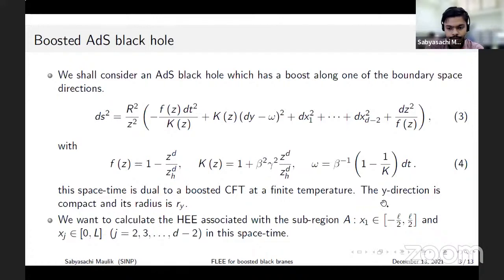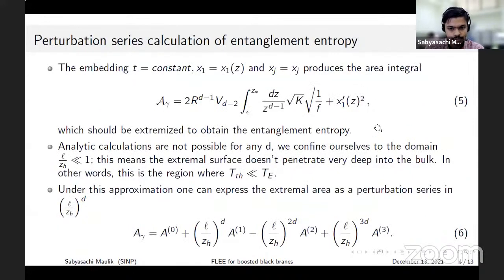For the holographic entanglement entropy calculation we chose a sub-region in the shape of a strip. The strip width is along x_1 direction and is denoted by curly L. The other directions are unconstrained but we put a large cutoff capital L to avoid any divergence.